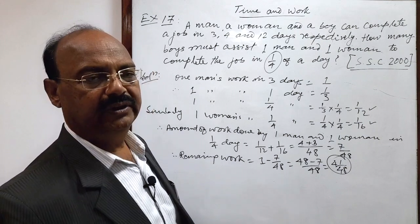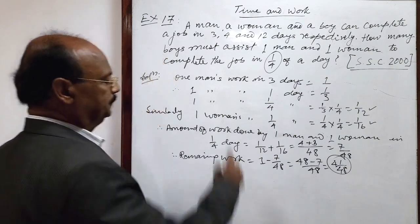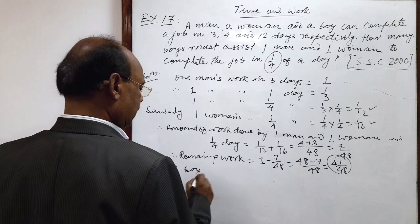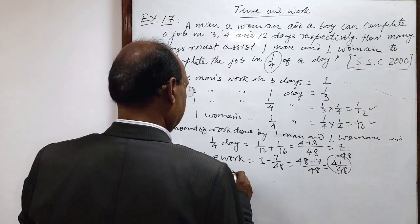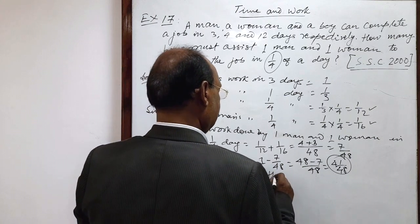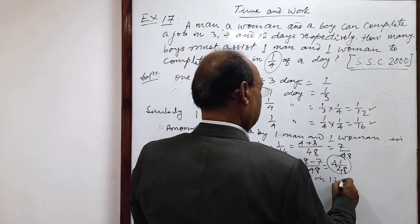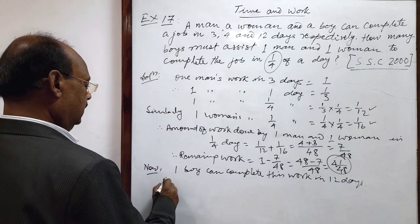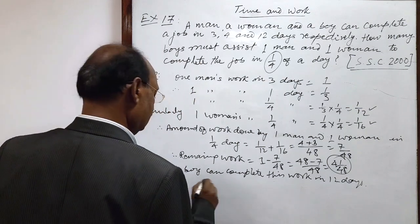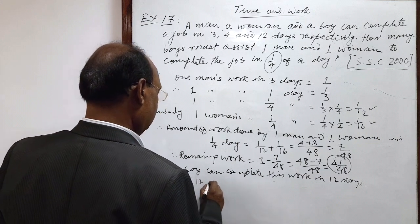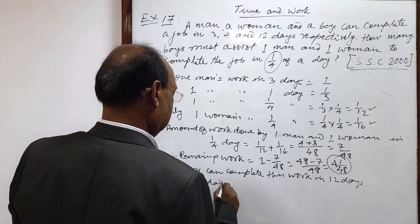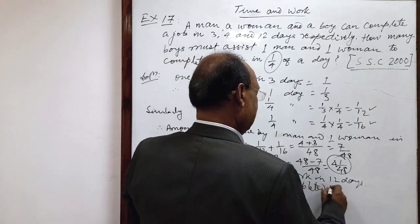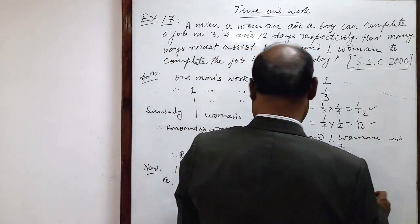So we need to find out number of boys. So, now we know, 1 boy can complete this work in 12 days. It means that is, in 12 days, 1 work is completed by 1 boy. So therefore...